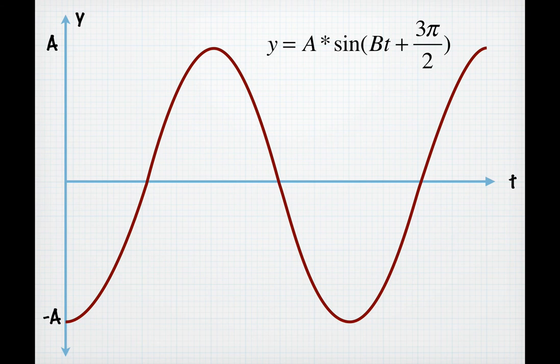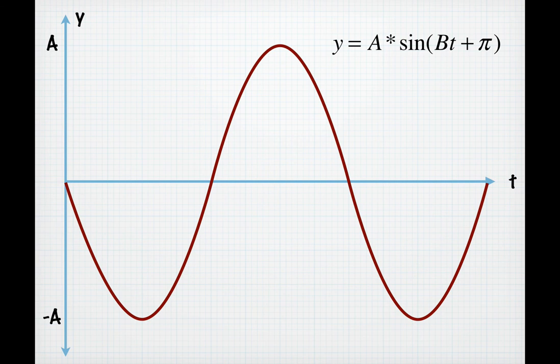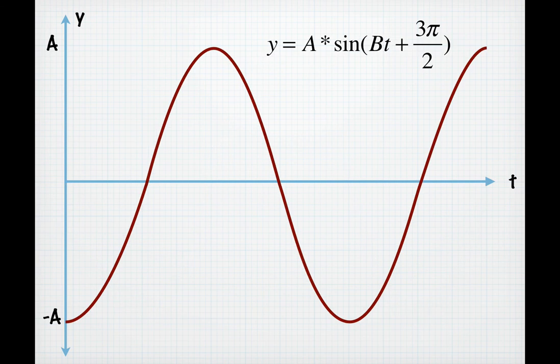So you should be able to equate in your mind these different pictures with these different phase shifts. So if you start at the highest point, it's pi over 2. If you start at 0 heading down, it's pi. And if you start out at the lowest point, that's a phase shift of 3 pi over 2. Other phase shifts are possible, but you will not be responsible for being able to visually determine them.